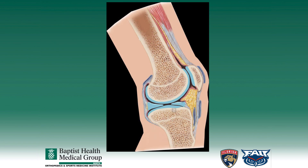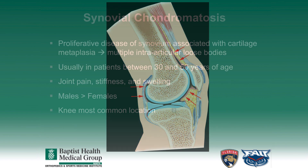The synovium of the knee is shown here in a lateral cross-section diagram of the knee. You can see multiple structures including the cartilage and the meniscus in light blue. Denoted by the red arrows is the synovium, which is the lining of the knee that helps to produce the synovial fluid, or the joint lubricating fluid.